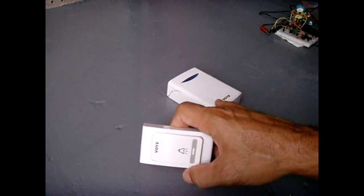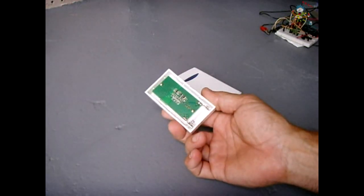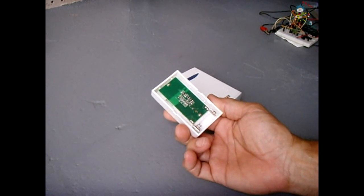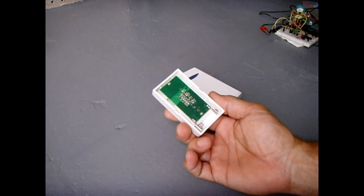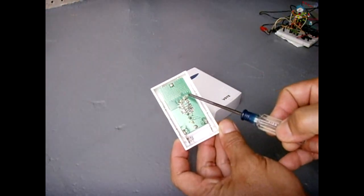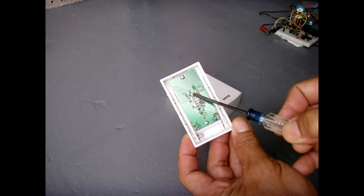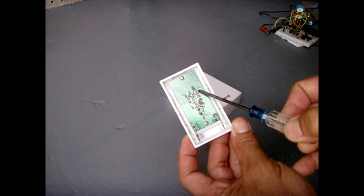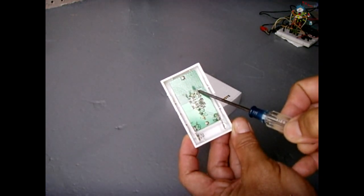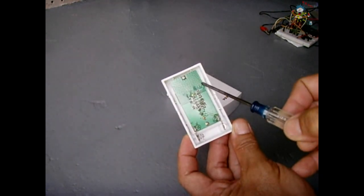Now this particular remote operates on 12 volts. Right over here is a little opening you can see for a trimmer capacitor for adjusting the frequency - you don't want to touch that. Right over here you can see this capacitor chip and that's where your antenna comes out.